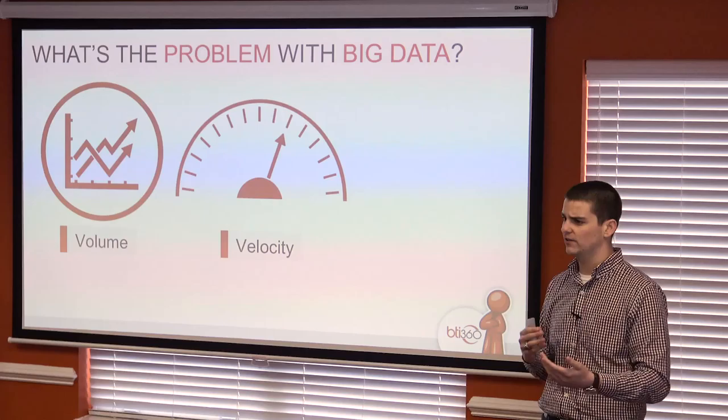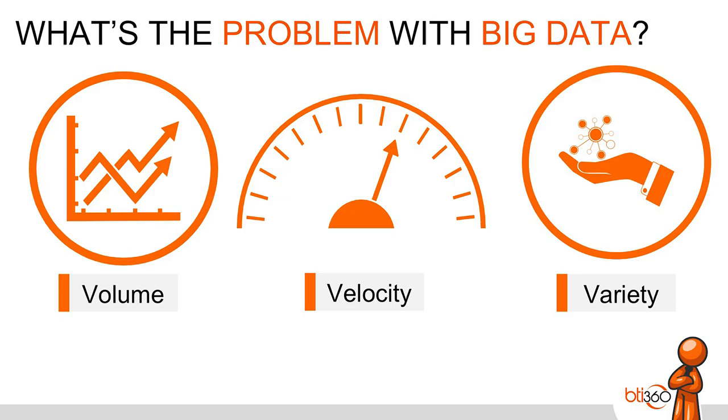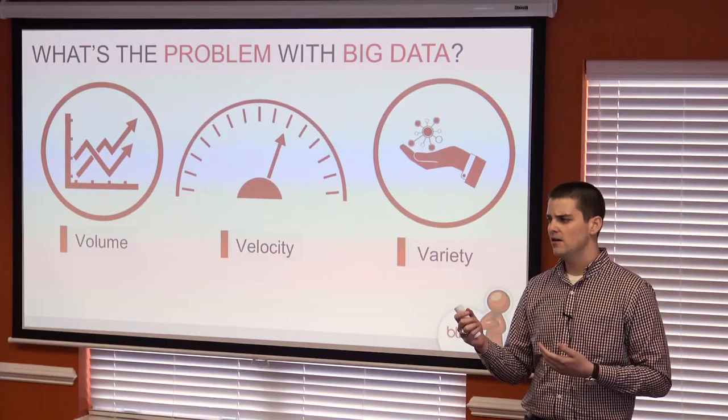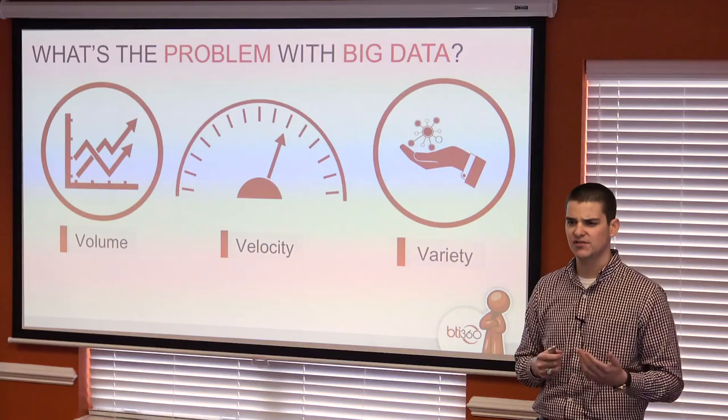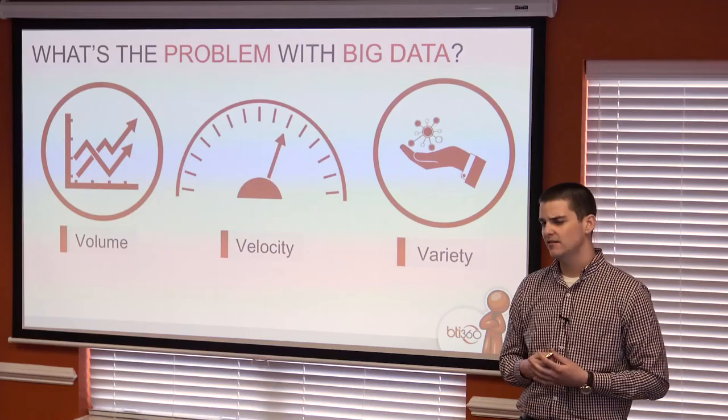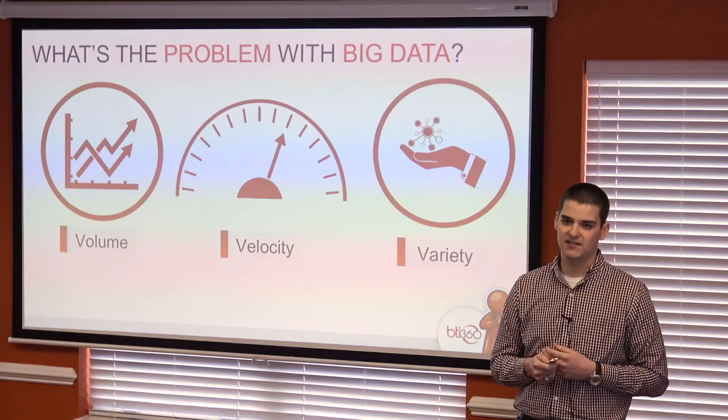The last one is variety, which corresponds to the ETL phase of big data. We're getting values in text form, geospatial coordinates, numbers — how do we correlate all those different values and bring them together into information that our users need? And so that being said, Hadoop solves our problem in this aspect.